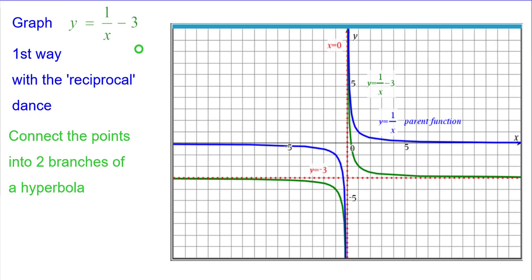Comparing this to the parent function, y equals 1 over x, we can see that from the blue to the green, it's down 3 from there, down 3 from there, and down 3 from there. In fact, from all of the points.